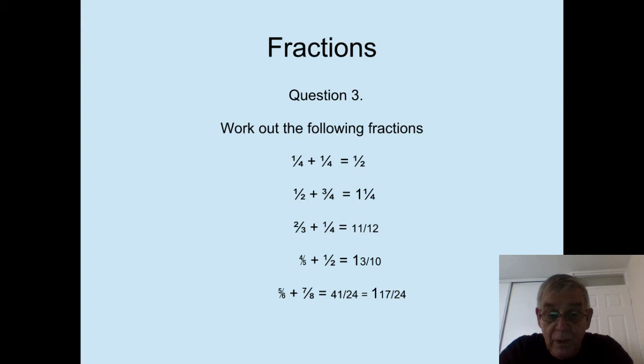So we're then left with forty-one over twenty-four. We then have a top-heavy fraction, so we have to divide twenty-four into forty-one. That actually goes once and leaves a remainder of seventeen. And that seventeen becomes the new fraction. So we have one and seventeen twenty-fourths as the answer.